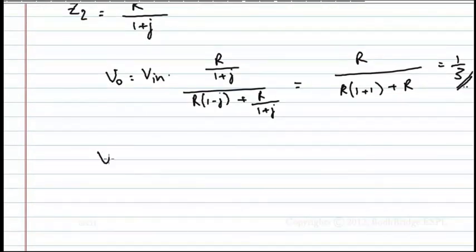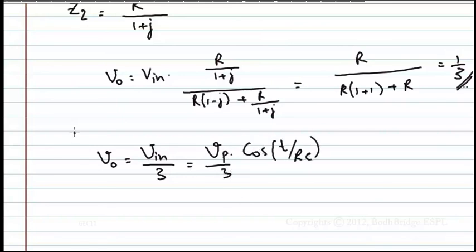Therefore V_output is equal to V_input by 3. V_input is given as Vp into cos(T/Rc) by 3. Therefore V_output and V_input are related by 1/3.